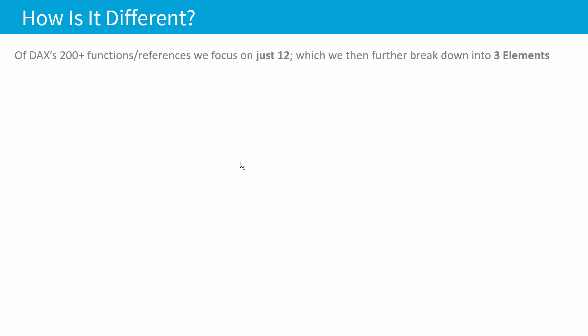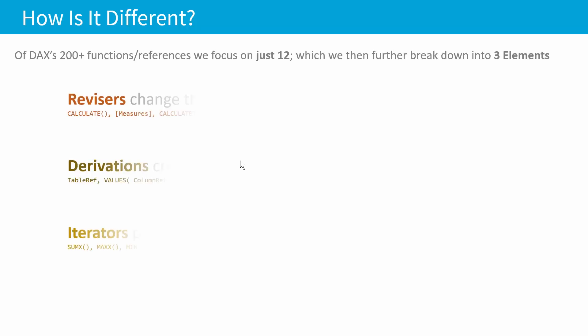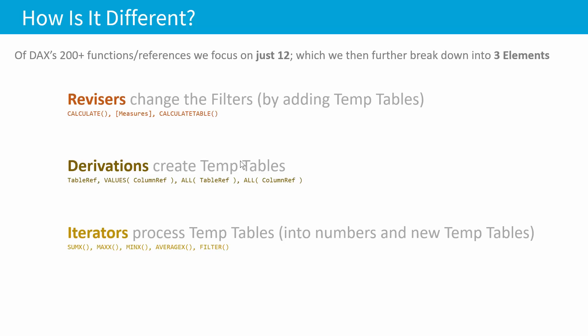Another way that it's going to be different is: of DAX's 200 or more functions and references, we're going to focus on just 12 — just 12 low-level functions and references, which we're further going to break down into just three elements: revisors, which change the filters; derivations, which create temp tables; and iterators, which process temp tables. And with just these three elements and 12 function references, we're going to be able to build all kinds of stuff — everything that you would do in an intermediate DAX course. That's not to say there aren't other function references or elements, but if you just focus on these, you will be able to start thinking in tables, which is our goal.